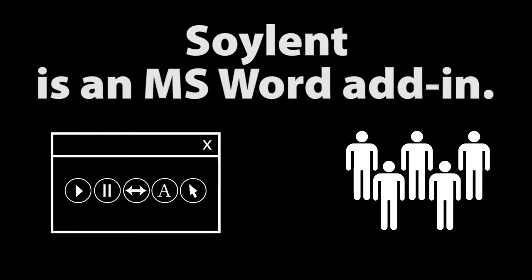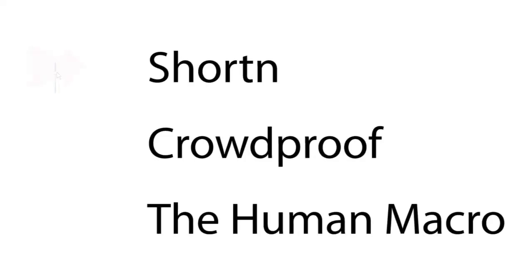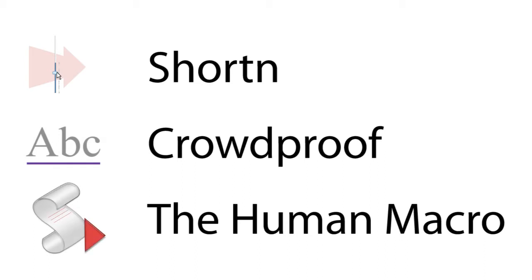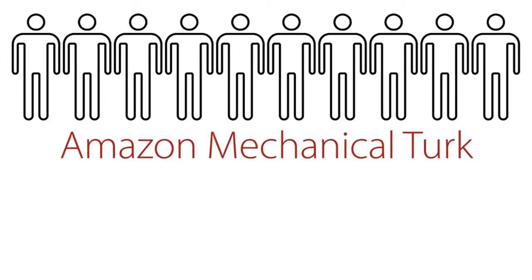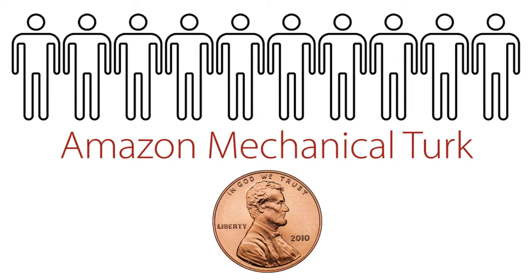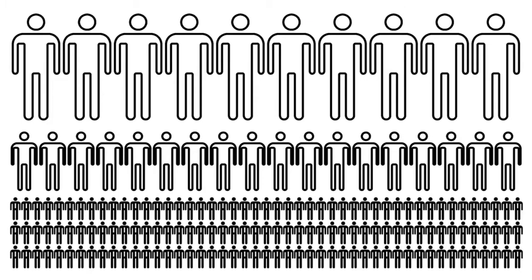Soylent is an add-in for Microsoft Word that gets human help to support tasks that Word can't do well: shortening, proofreading, and open-ended editing via macros. It does this by recruiting workers on Amazon's Mechanical Turk service to solve hard AI problems for just a few cents. Each member of the crowd does a little bit of work, so it's like having tens or hundreds of people help you write your document.